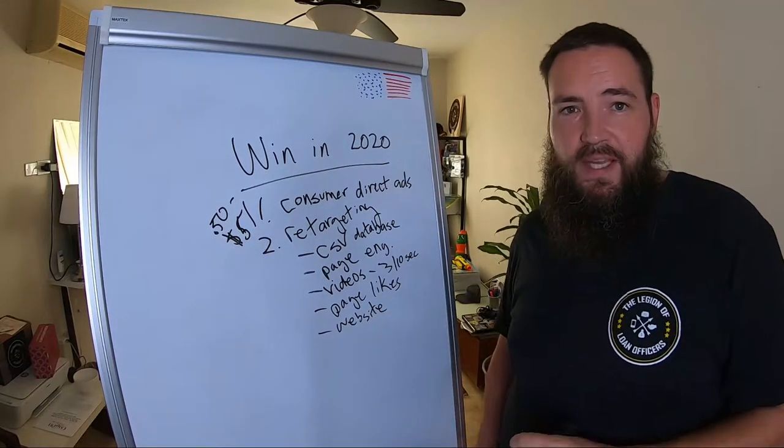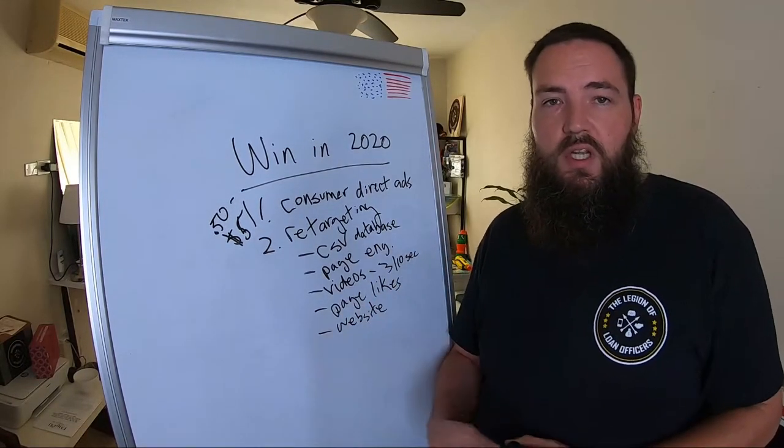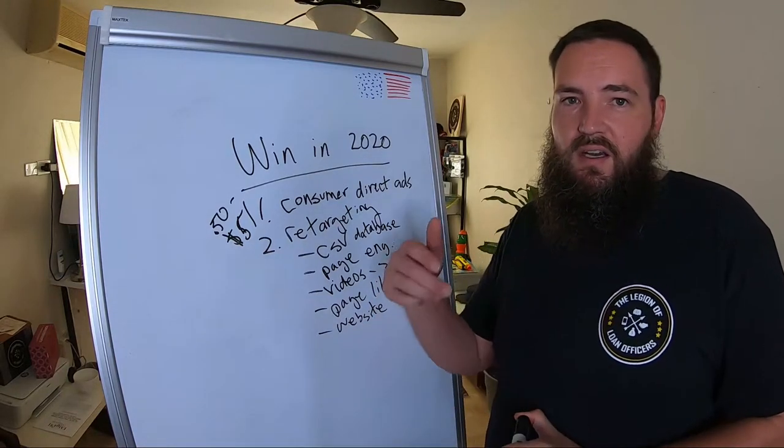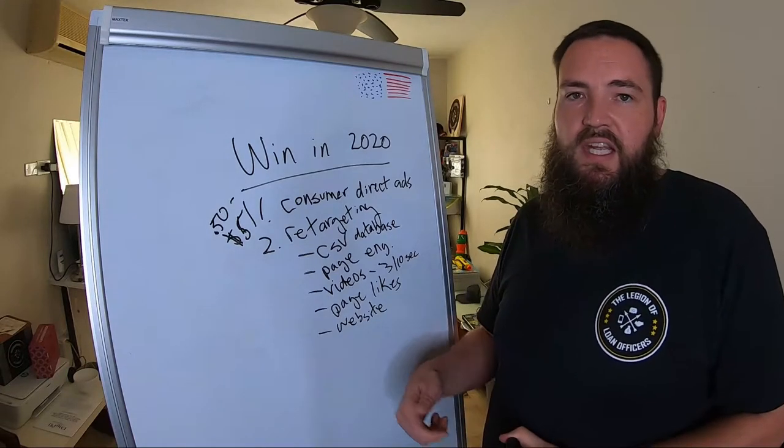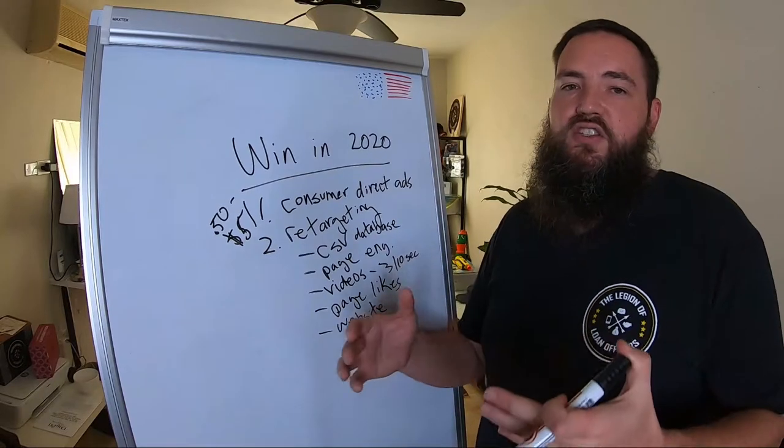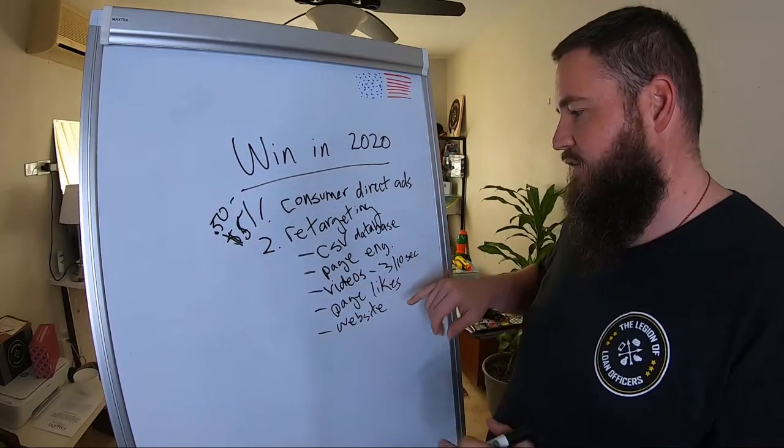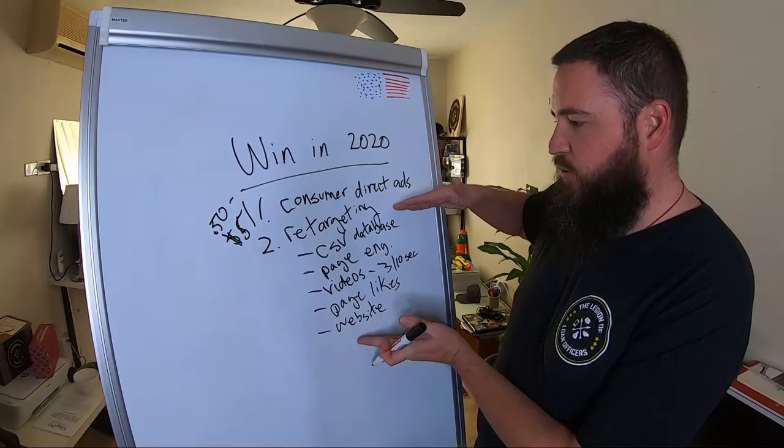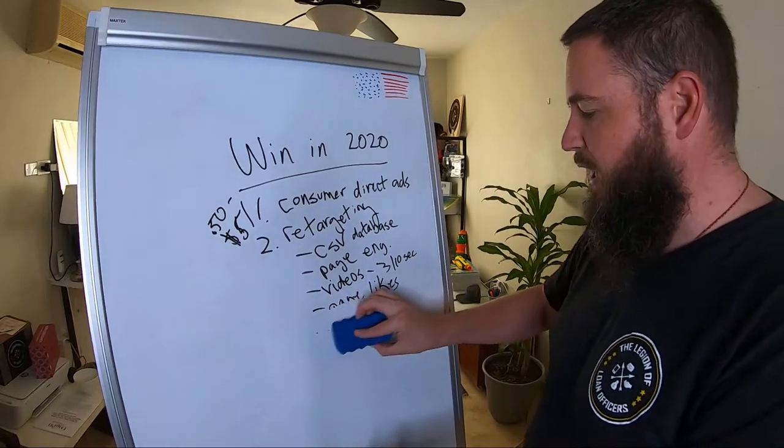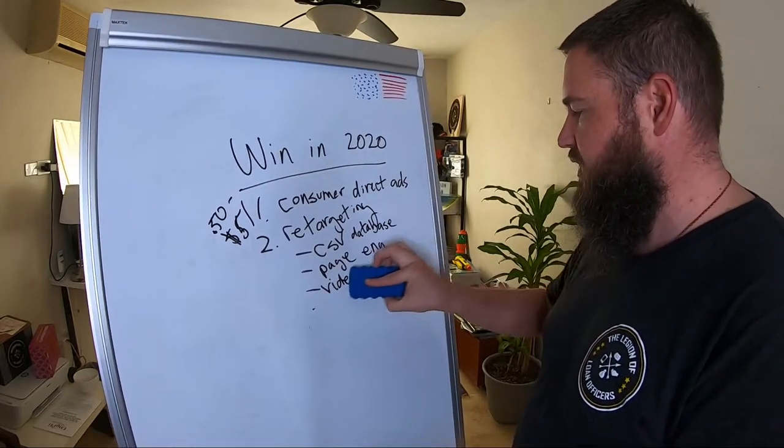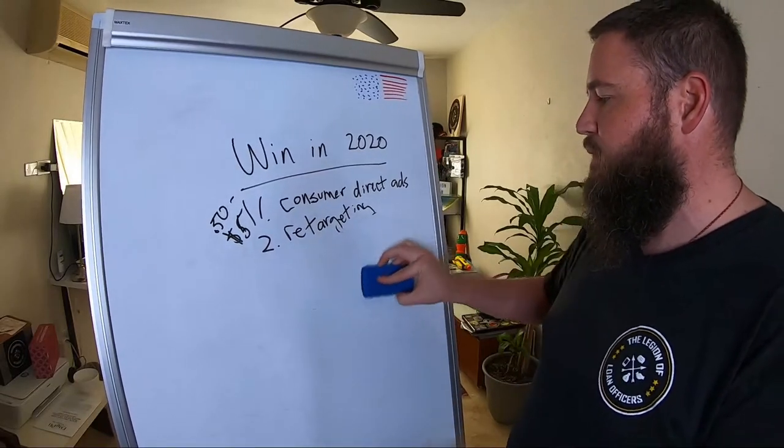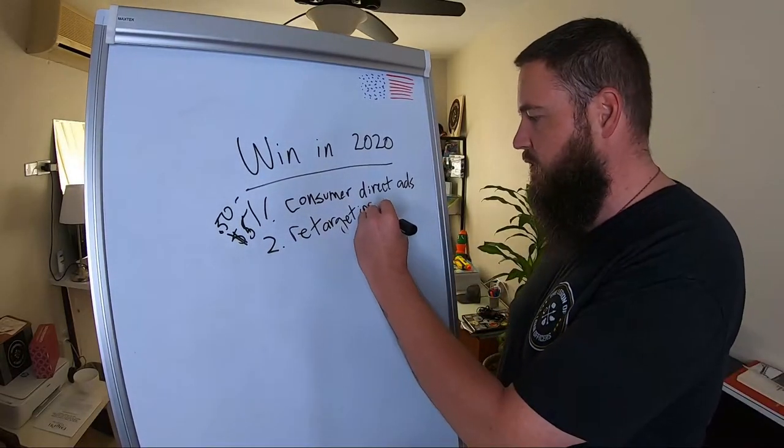And then you've got your CSV from your database. You've got your page likes and your page engagement. You've also got your page likes. And then finally, you've got your website. If you go into Facebook ads manager, they have what's called the Facebook pixel and you can download that pixel, put it on your website. If you're not sure how to do that, find a tech person that can help you with it. And now everybody that goes to your personal website is going to get tracked by Facebook. So now you can have these five audiences and you can create retargeting to these five audiences.